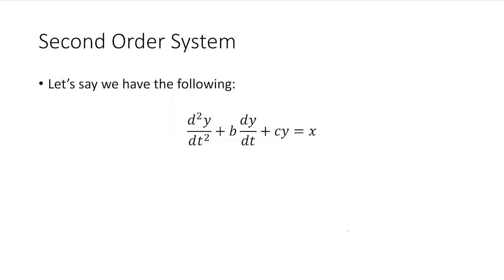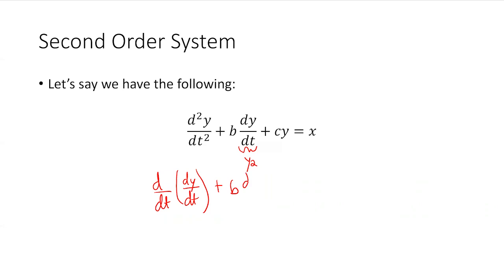This could be some sort of a circuit or whatever the case may be. What I want to do is take the dy/dt and define it as some variable — I'm going to call it y2. So I'll write d²y/dt² as d/dt of the first derivative. So: d/dt of (dy/dt) plus b times dy/dt plus c times y equals x. The second derivative has been written as the first derivative of the first derivative.